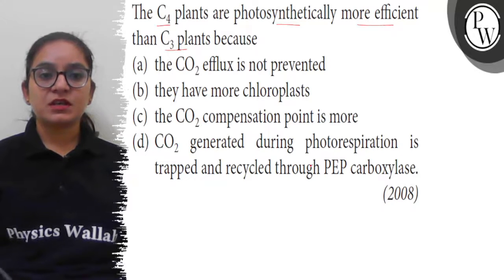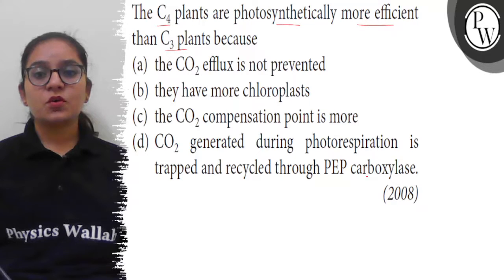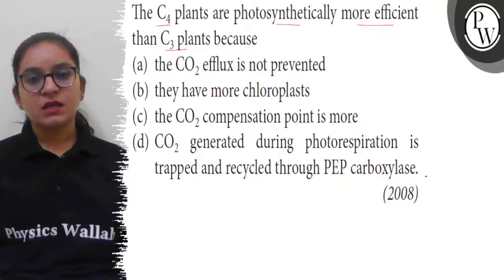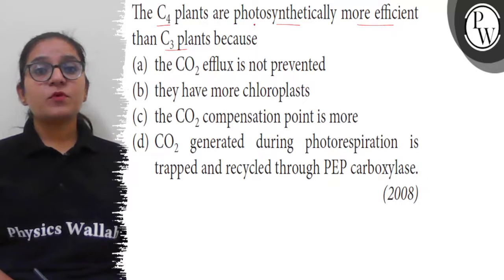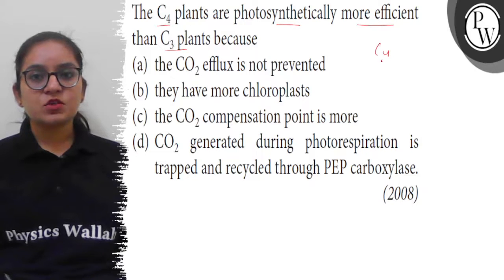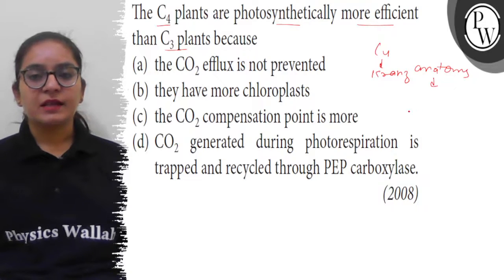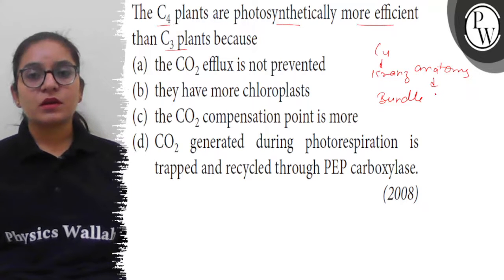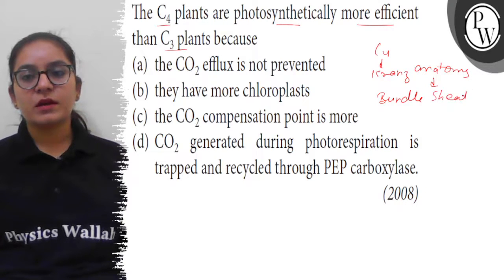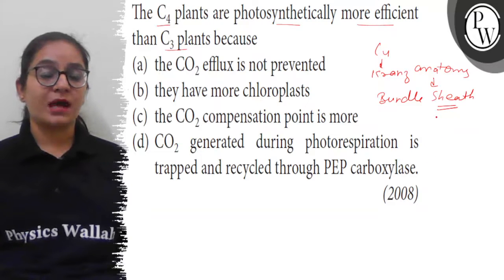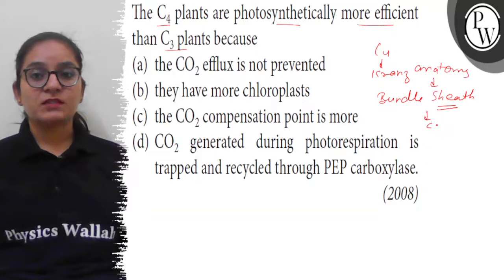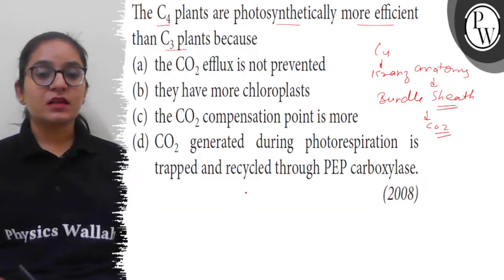So, C4 plants show Kranz anatomy. In Kranz anatomy, the mesophyll is not differentiated, and they also have bundle sheath cells over the vascular bundle. These bundle sheath cells have chloroplasts and they can fix carbon dioxide.